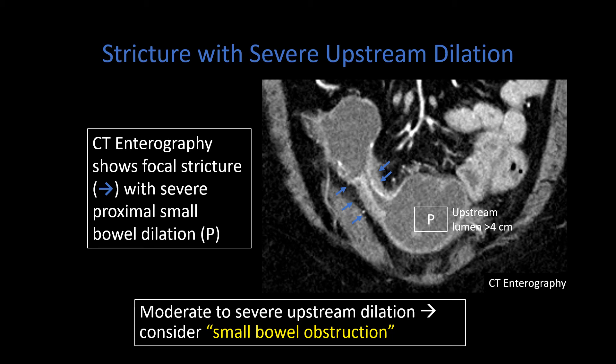Here is another example on CTE of a stricture with active inflammation. We see inner wall hyper-enhancement, wall thickening, mural stratification, luminal narrowing, and then severe upstream dilation. We also see some severe downstream dilation, which likely indicates there's another stricture. In some cases, depending on the patient's symptoms, this could manifest as a small bowel obstruction.